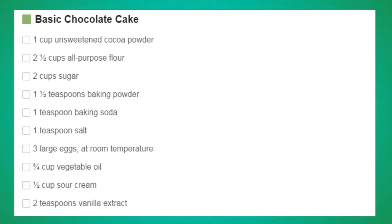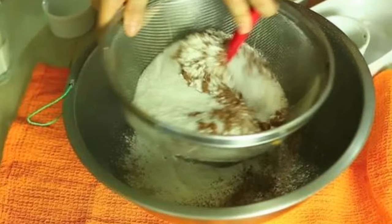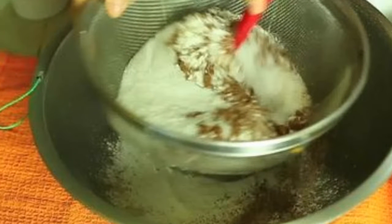Let's start. Number 1: Sift the dry ingredients together. The dry ingredients are the flour, cocoa powder, sugar, baking powder, baking soda, and salt. Place all the dry ingredients in a sifter and shake it back and forth over a bowl to eliminate the clumps.